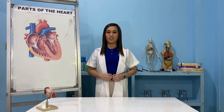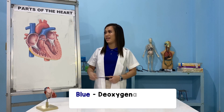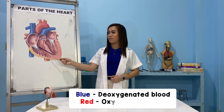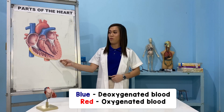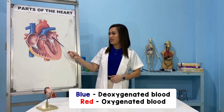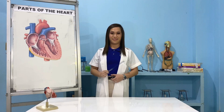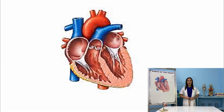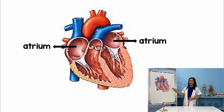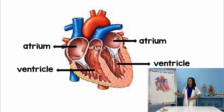The heart acts as a two-way pump. The right side of the heart receives and pumps the oxygenated blood, while the left side of the heart receives and pumps oxygenated blood. The heart is composed of four chambers. The upper chambers are called the atria, which act as the receiving chambers. The lower chambers are called the ventricles, which act as the pumping chambers.